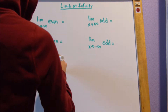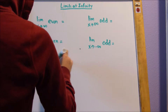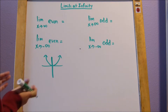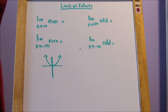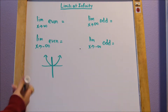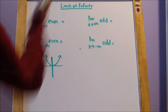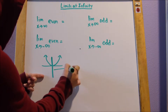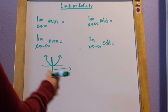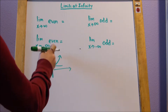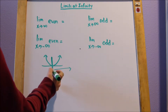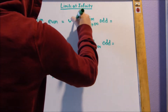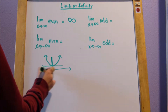Let me graph x squared again. When a problem asks you what the limit at infinity is, it's basically asking where is that graph heading to at infinity — just where is it going in that general vicinity. As x approaches infinity, we want to know what the limit is — how is our y behaving. We can see that as x approaches infinity, our y is going to approach infinity. It's just going to keep increasing, so the limit is infinity.